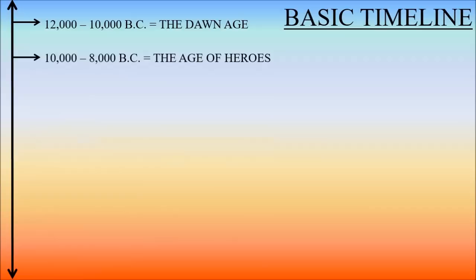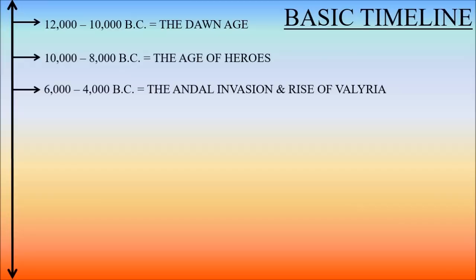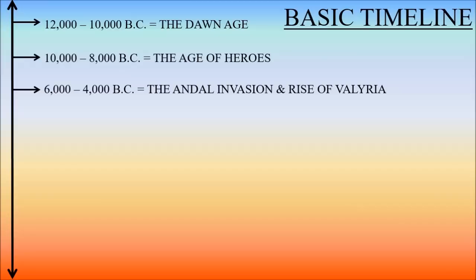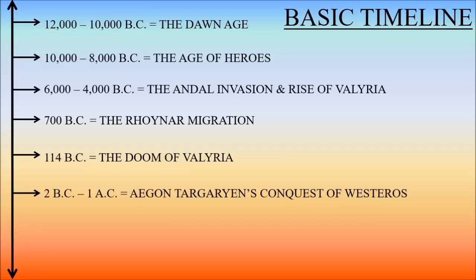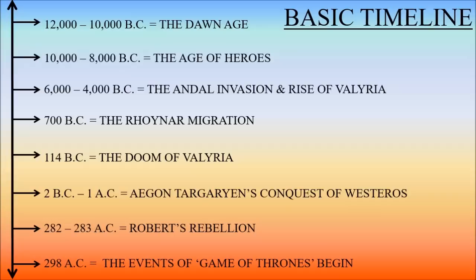History on Planetos is divided into chunks of time called Ages. First there was the prehistoric Dawn Age, and we don't have too much information about this time period. Then there's the Age of Heroes, which spawned much of the mythology of Westeros and Essos. After that, the Andals invade and conquer Westeros as the dragonlords of Valyria rise in Essos. Meanwhile, the Rhoynar migrate from Essos, and Westeros begins the time of the seven separate kingdoms. Eventually this leads to the Doom of Valyria and the conquest of Westeros by Aegon Targaryen. The dynasty eventually falls after Robert's Rebellion, taking us up to the events of the books — about 15 to 20 years later.